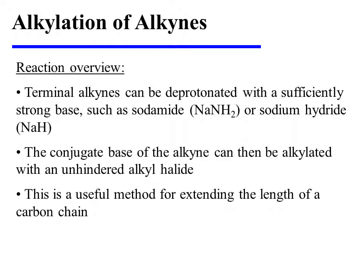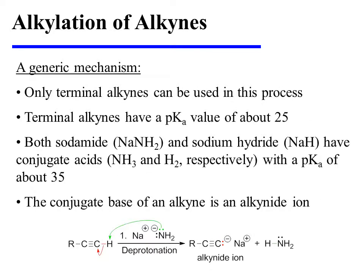Terminal alkynes can be deprotonated with a sufficiently strong base, such as sodium amide or sodium hydride. The conjugate base of the alkyne can then be alkylated using an unhindered alkyl halide. This is a useful method for extending the length of a carbon chain. Only terminal alkynes can be used in this process because the alkyne must possess at least one acidic proton on an sp hybridized carbon.